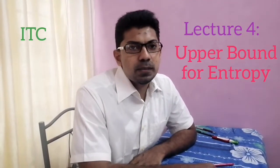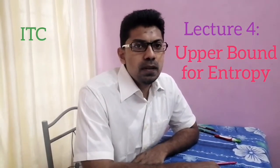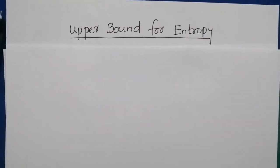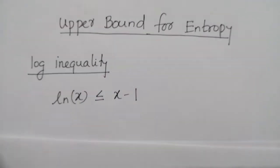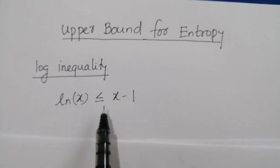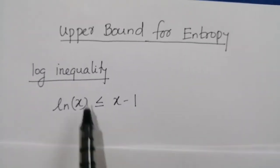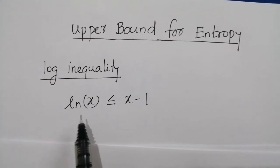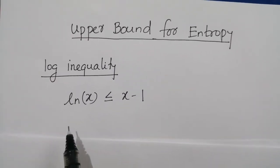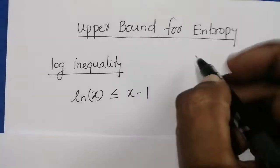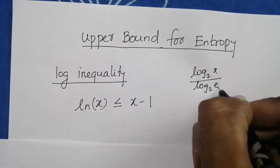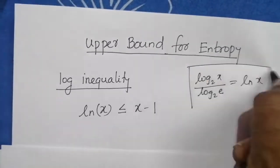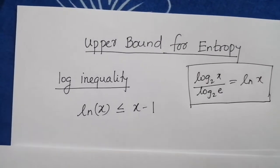Hello everyone. Yesterday we discussed the concept of entropy of the source. Today we will find the upper bound for entropy. For finding the upper bound for entropy we need to be familiar with the log inequality. The log inequality is given by ln x ≤ x − 1, where ln x is the natural logarithm. The relation between log base 2 of x and ln x is: log₂x divided by log₂e equals ln x.